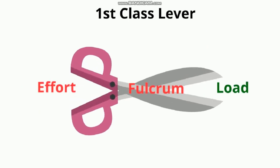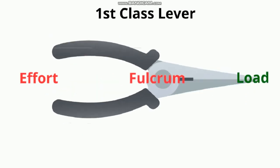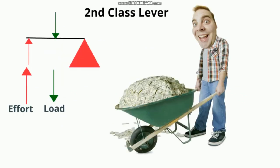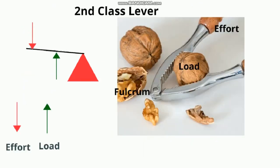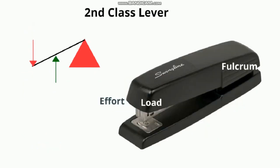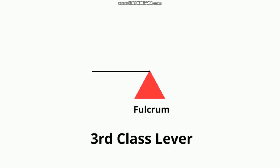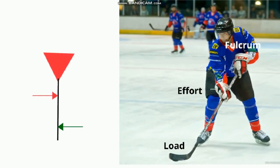In the second class lever, the fulcrum is at one end, the load is at the center, and the effort is at the other end. In the third class lever, the fulcrum is at one end and the effort is at the center. For example, when a player plays hockey, or when someone catches a fish with a rod, or when someone sweeps leaves — force is applied in the front, making these examples of the third class lever.